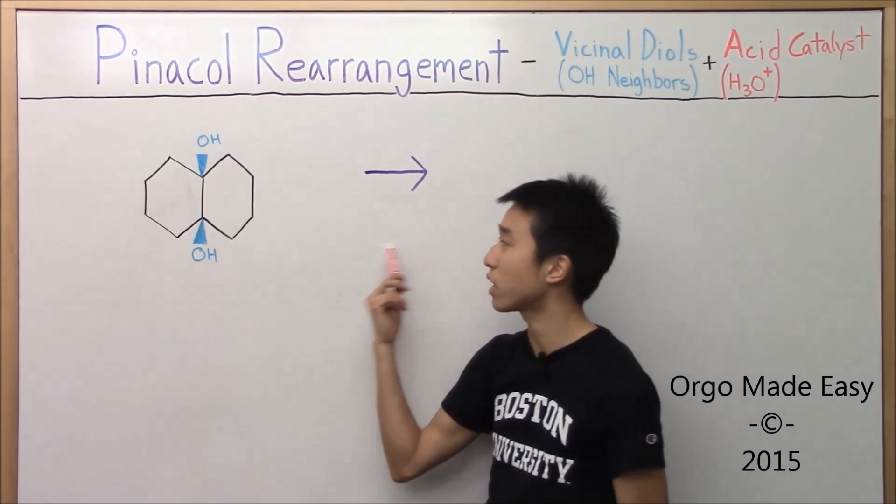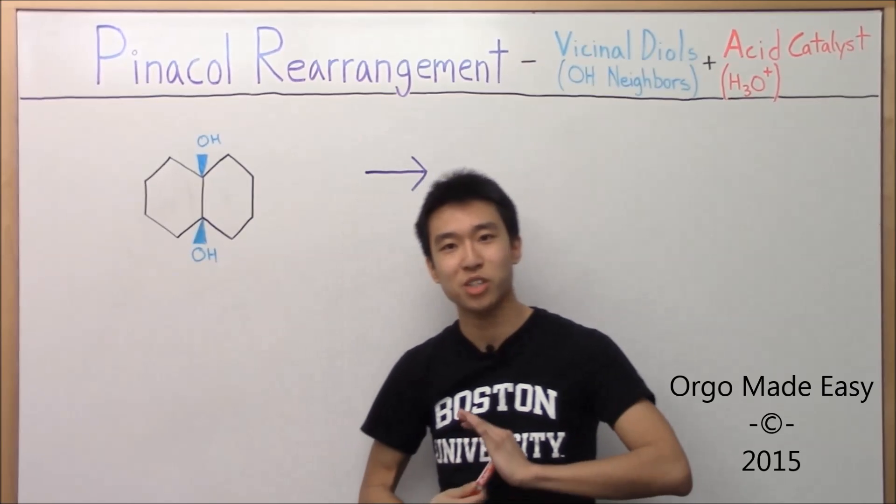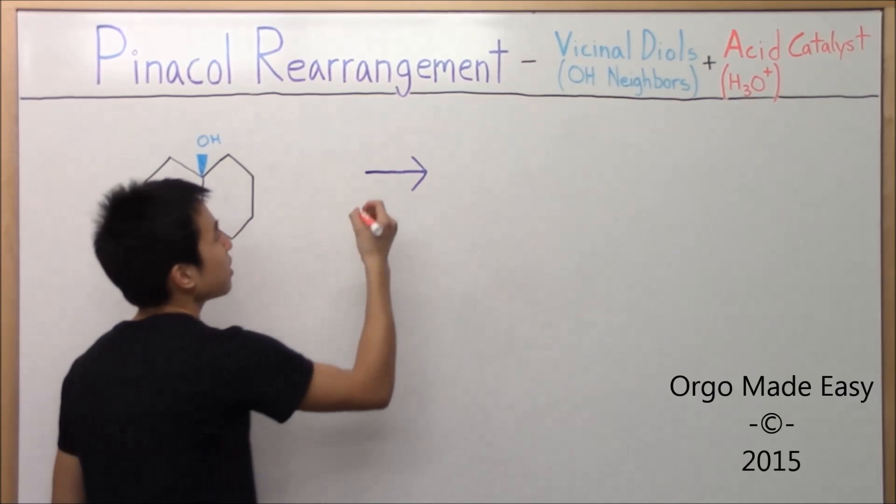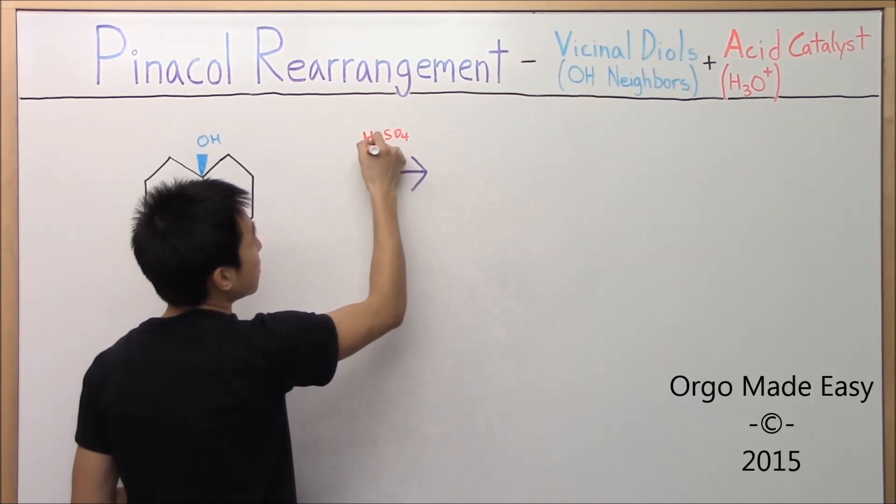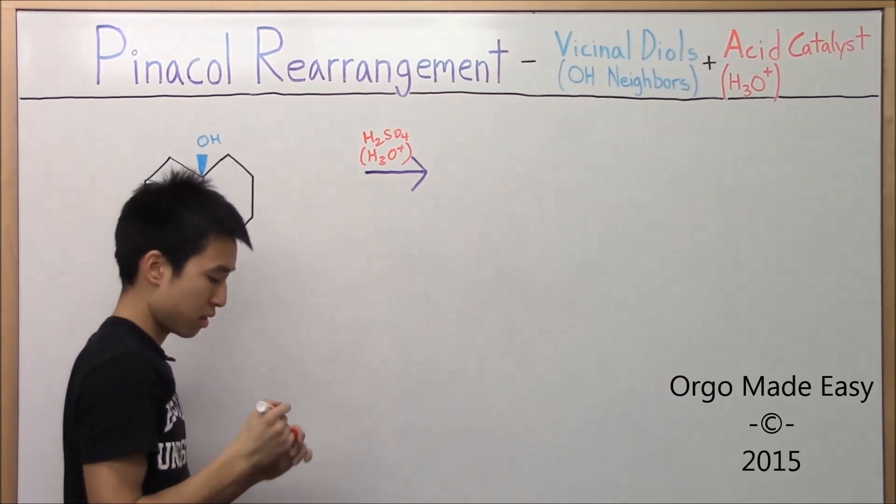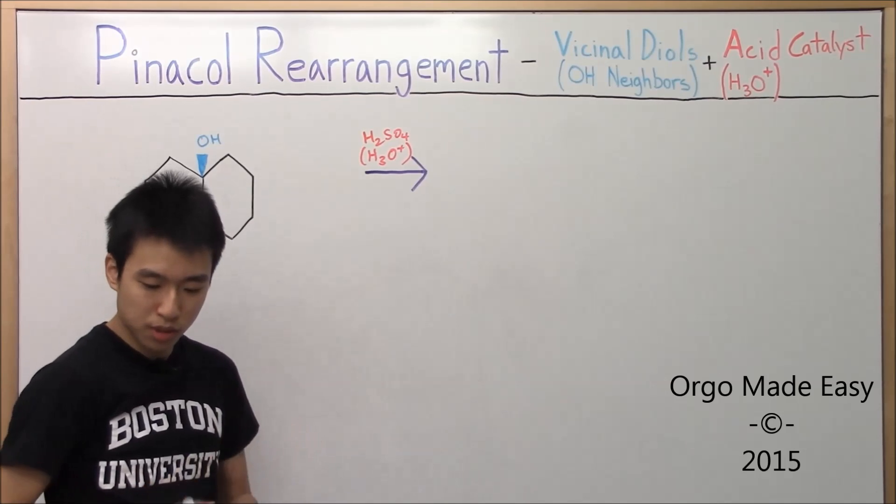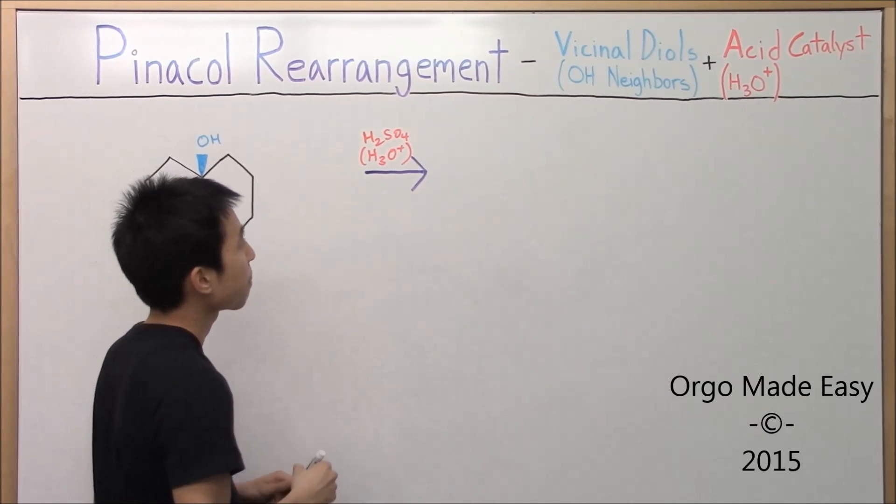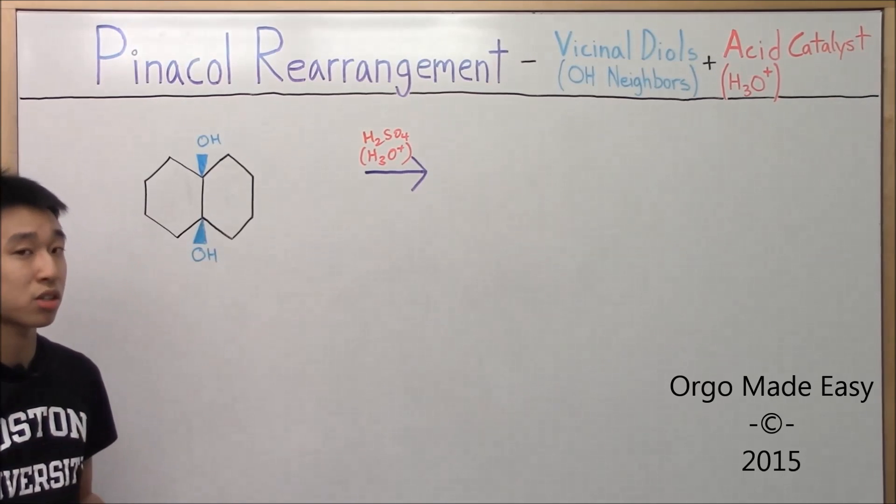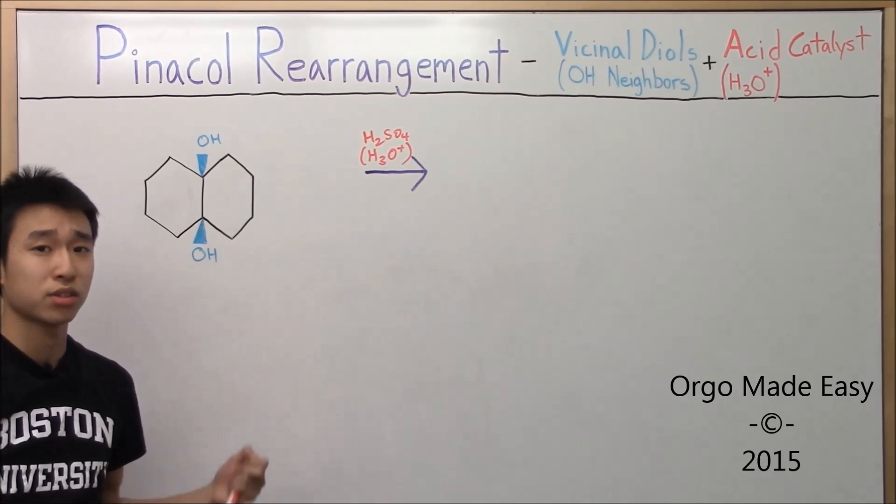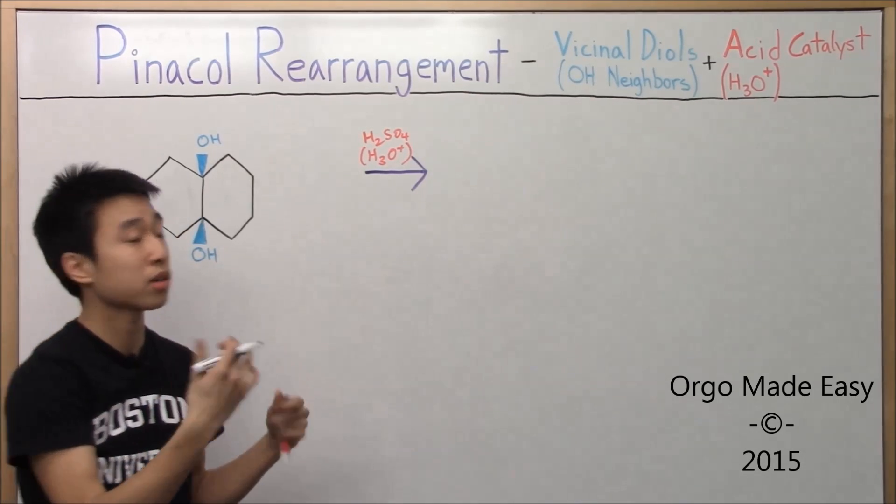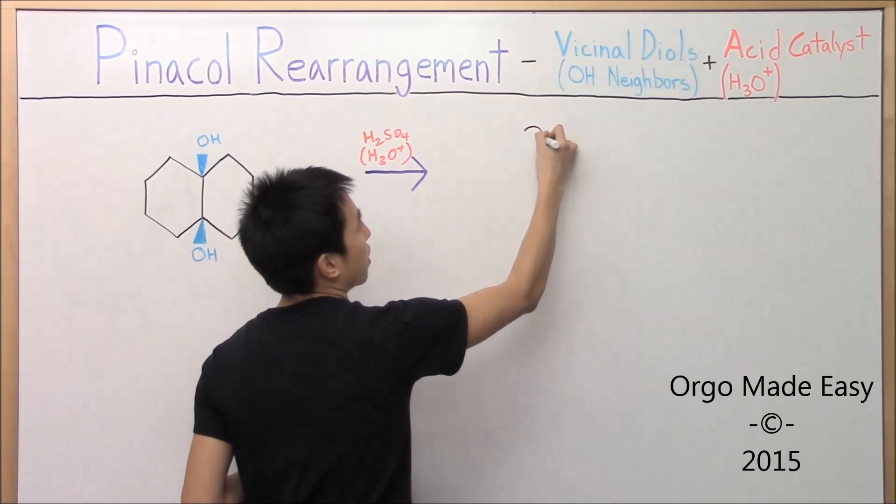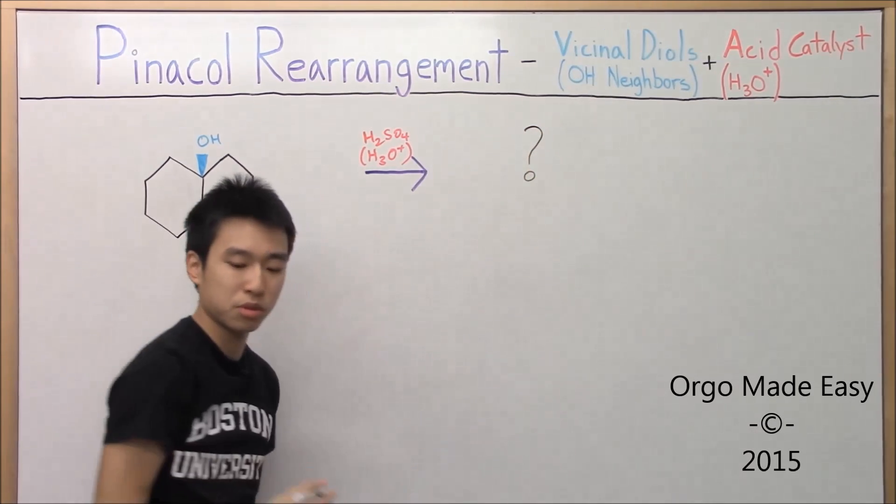What reagent do we need to react this with in order to do the Pinacol Rearrangement? Do you remember? As always, you need H2SO4 or some sort of acid. So H2SO4, H3O+, is our guy. For this one, the product is... I'm not going to ask you guys to do the product prediction because it's too crazy. I would just do the mechanism out in order to get the product. So we'll just leave this guy as a question mark for now and then we'll figure it out together.